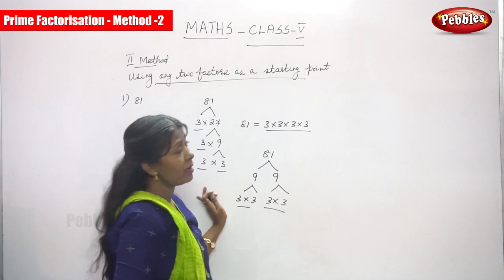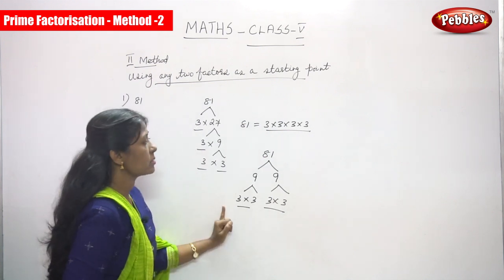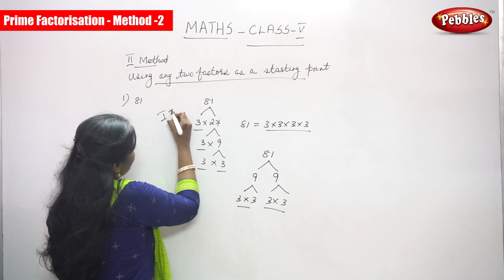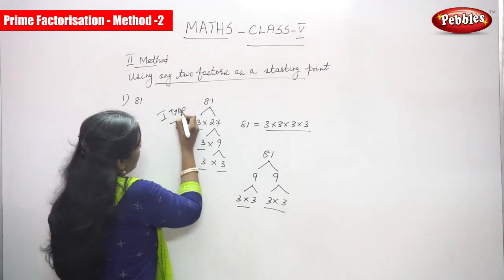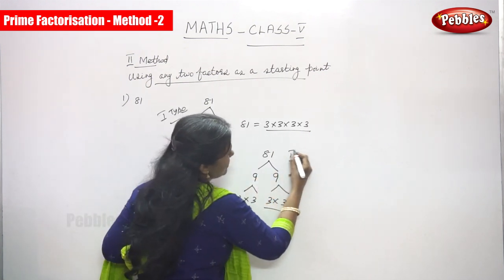So what are the numbers? 3, 3, 3, 3. So 3 into 3 into 3 into 3 is 81 as a factor. This is one method using as a factor, and this is the first type you can consider. This is the first type and this is the second type.